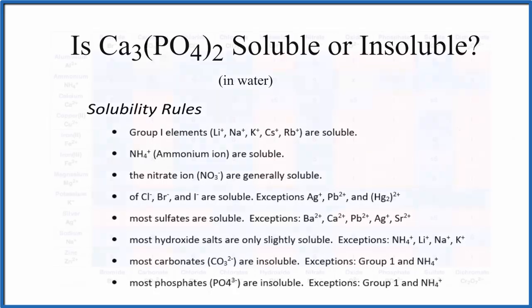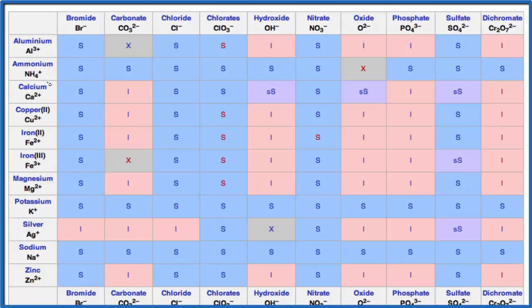Let's look at the solubility chart quickly. So we find calcium right here and then phosphate. We go across and down and that I means insoluble, just like we found with the solubility rules.